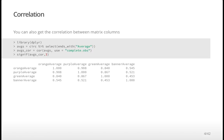There is a Fisher r-to-z transformation approximation. For correlations very close to 1 or 0, it's not a great approximation, but for the majority of cases, the arc-tangent transformation gives a more-or-less normally distributed statistic and you can use the standard normal distribution.